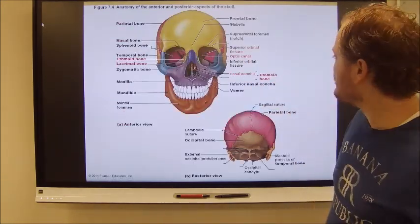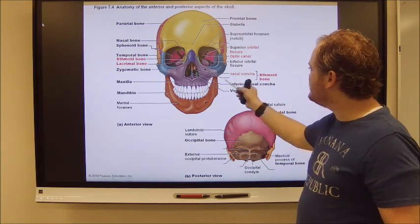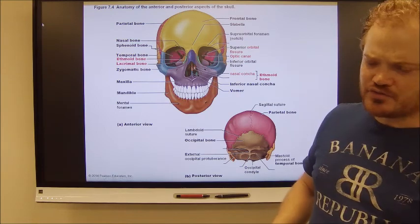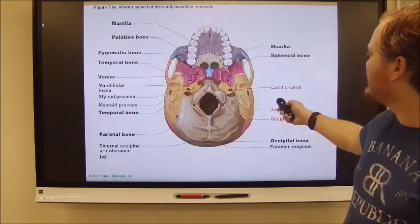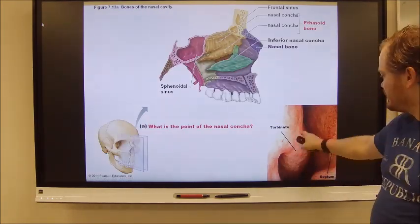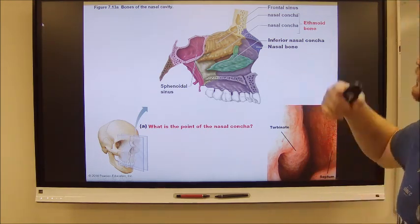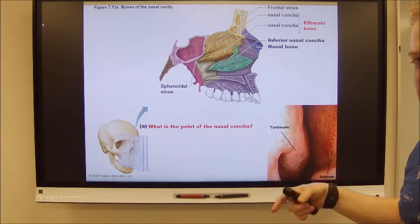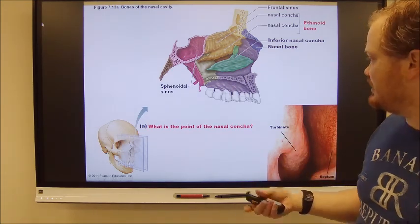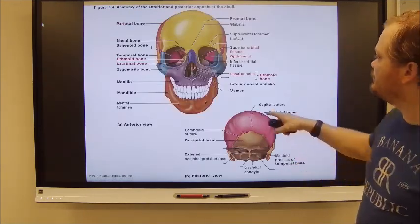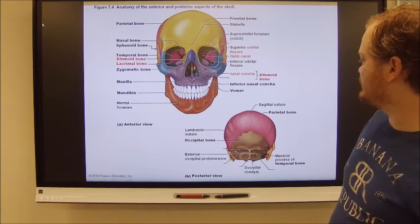The nasal conchae — also called turbinates — are structures inside the nose, parts of the ethmoid bone. There are three of these bony structures inside the nasal cavity and they're pretty cool: they help spin the air as it moves through, warming it up and pulling debris out of it, basically cleaning it on its way down.